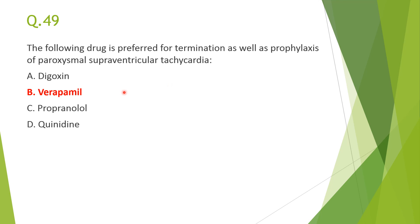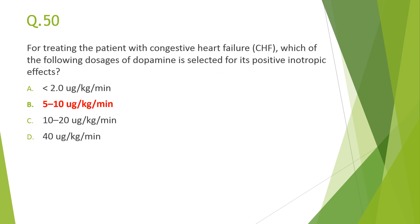Next: the drug preferred for both termination and prophylaxis of paroxysmal supraventricular tachycardia (PSVT) — answer: verapamil. It is preferred for termination of acute attacks of PSVT as well as for prophylaxis to prevent recurrences.